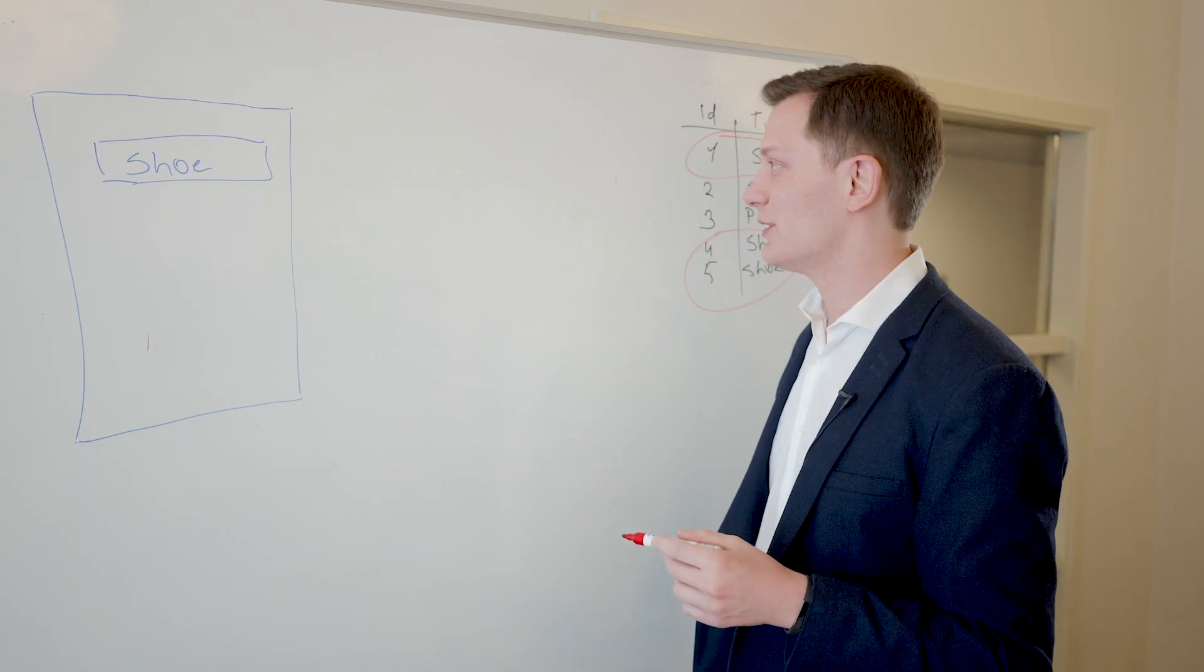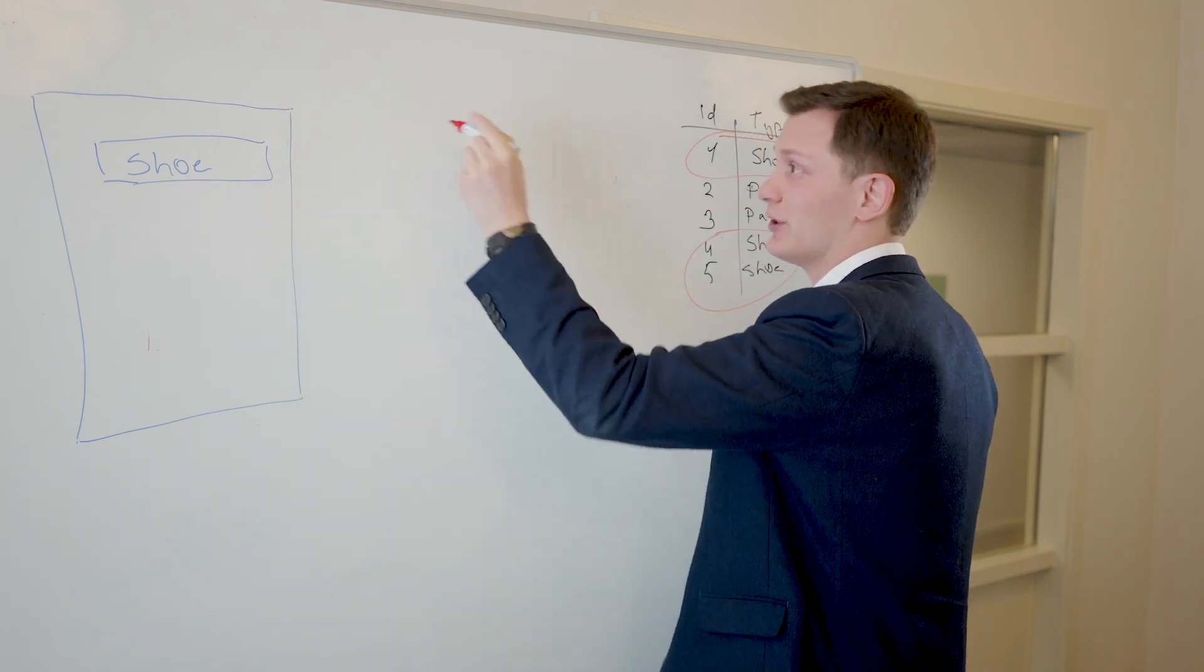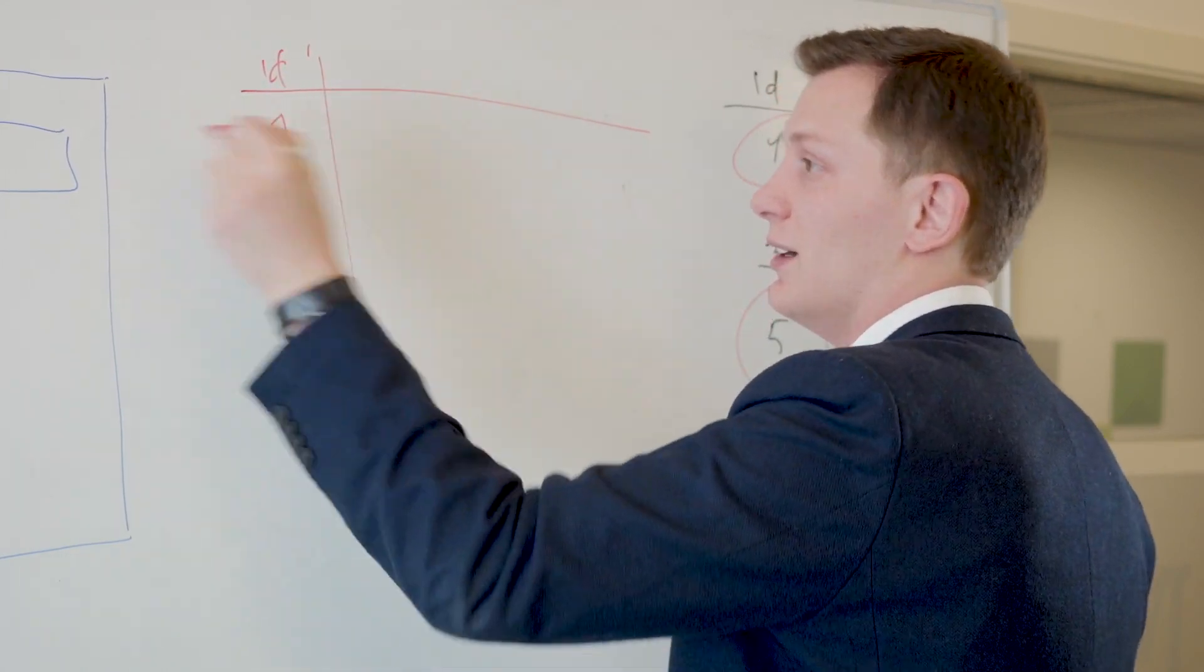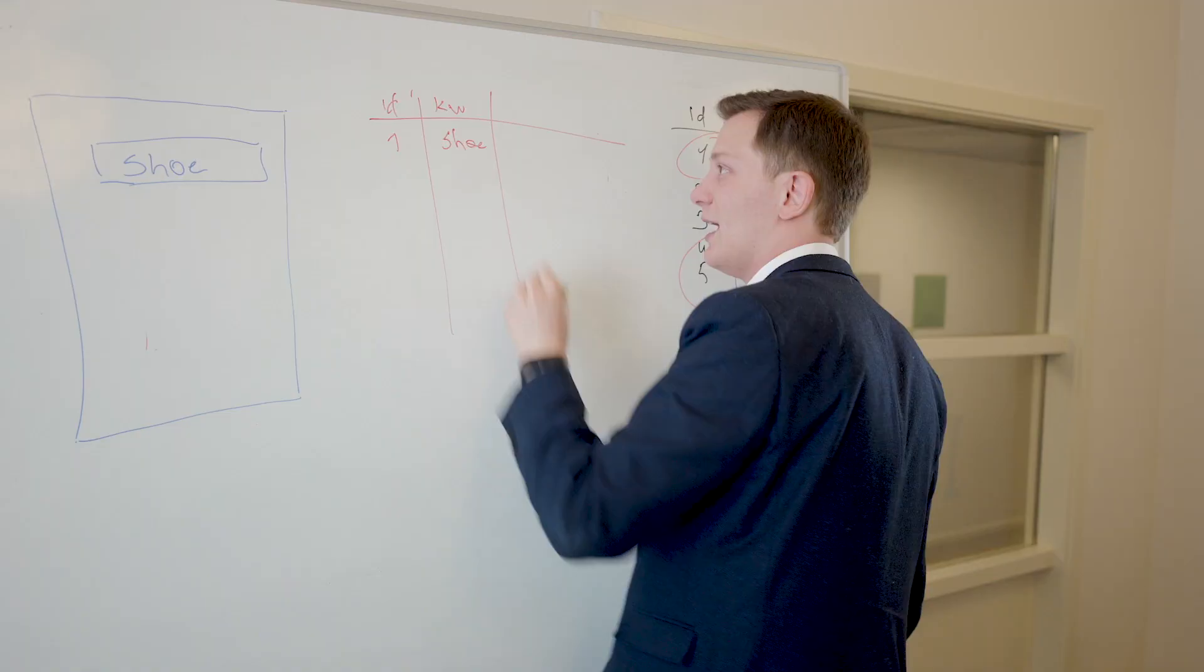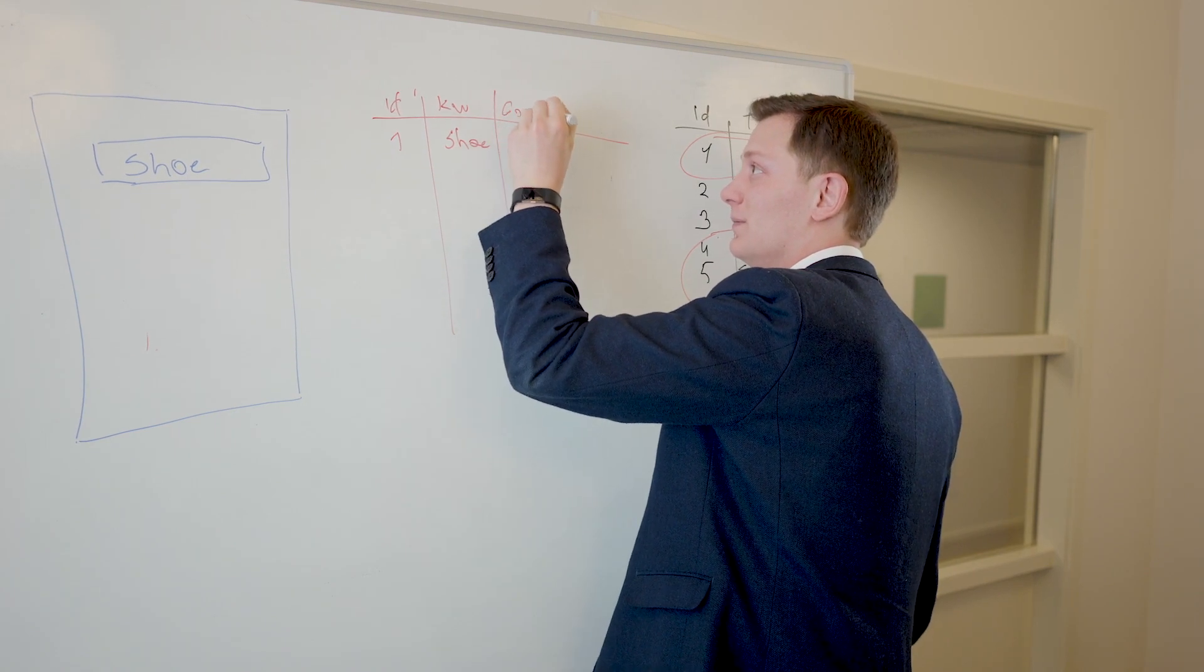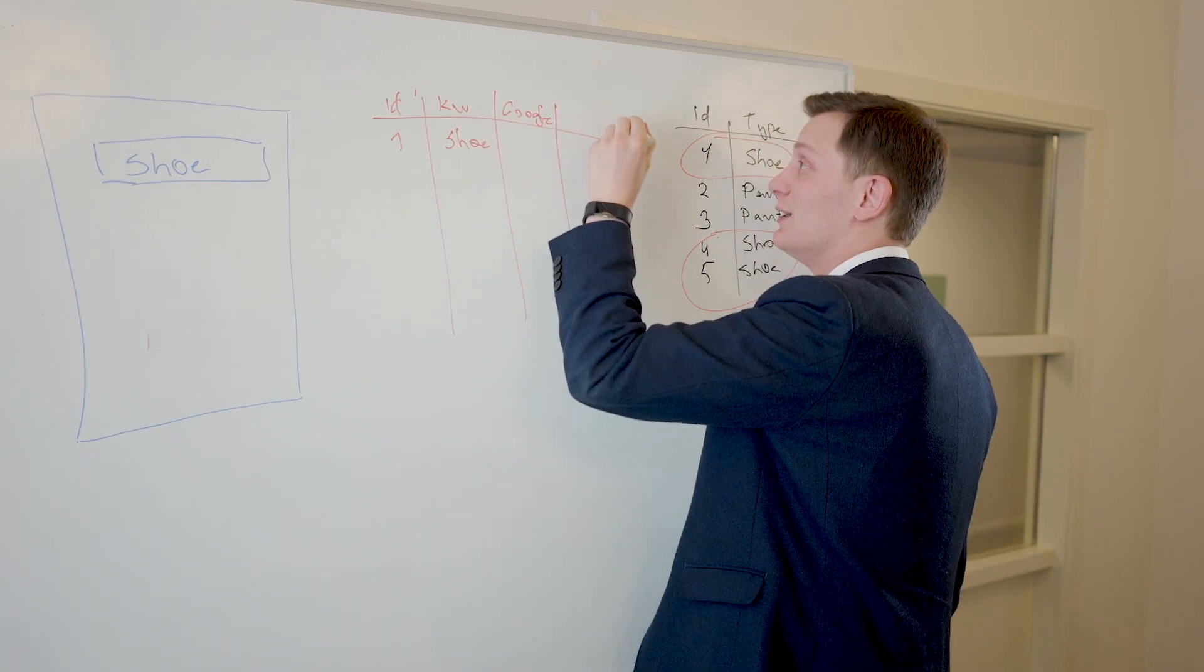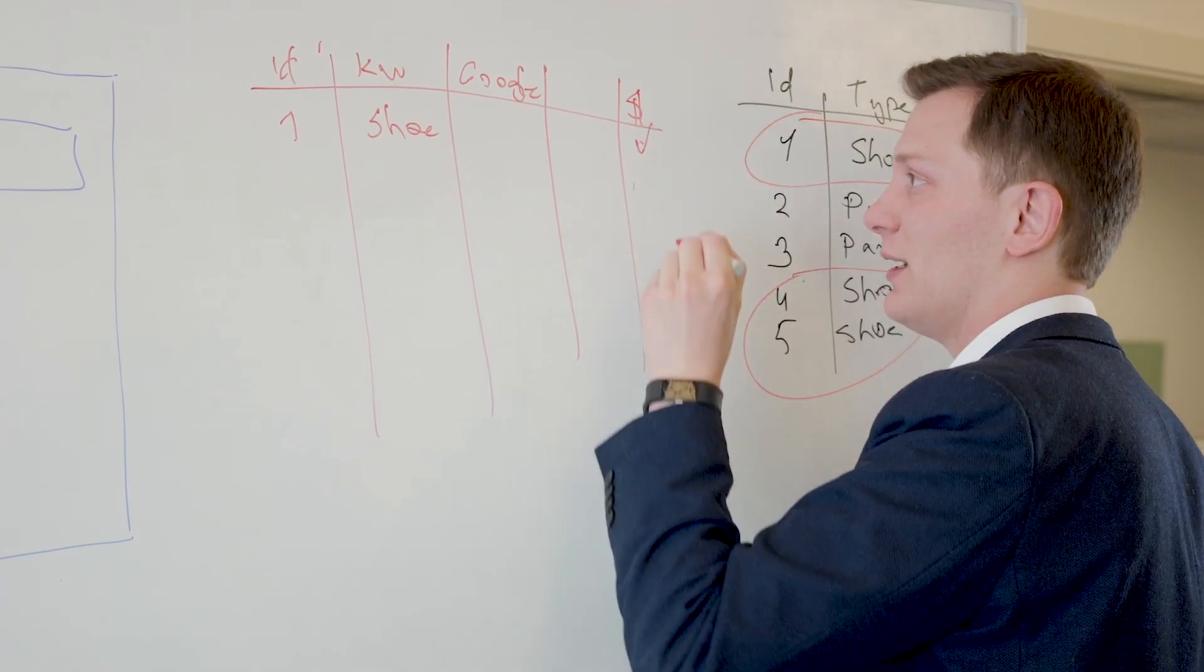So the way you could do that is you have all the historic searches. Search one contained the keyword shoe and the user came from Google, and you have all of these informations about the user. Lastly and most importantly, did the user buy this or not? So let's say this user bought and the next user didn't buy.